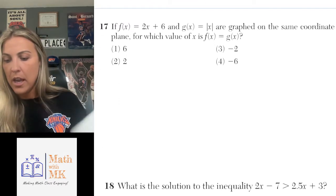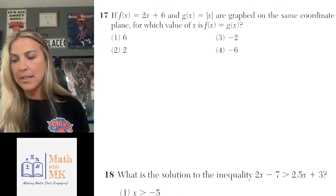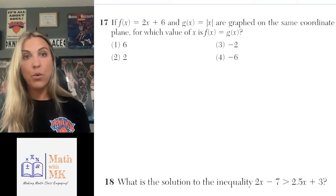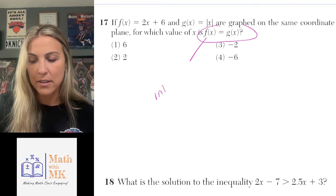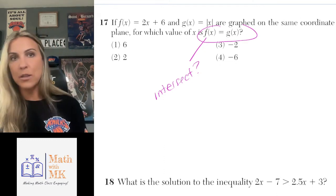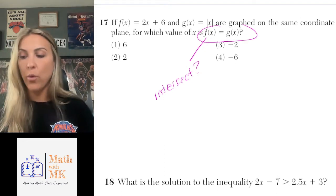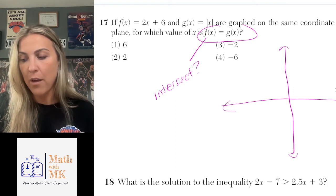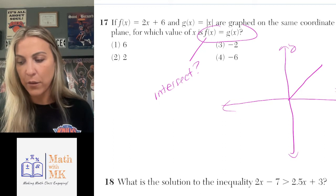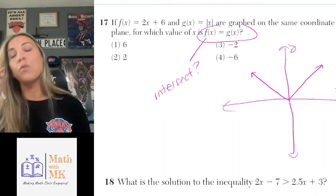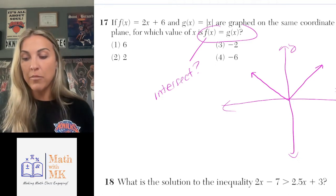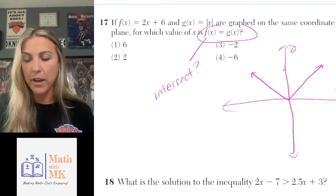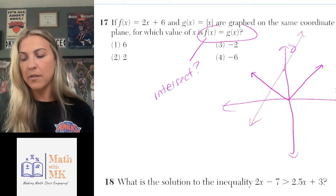Number 17: f of x is 2x plus 6 and g of x is the absolute value of x are graphed on the same coordinate plane. For which value of x is f of x equal to g of x? This is essentially asking where are they going to intersect. For the Algebra Regents you have your graphing calculator, so throw both equations in. The absolute value of x will look like a V with its vertex at the origin, and the line 2x plus 6 goes through 6 as its y-intercept with a positive slope.